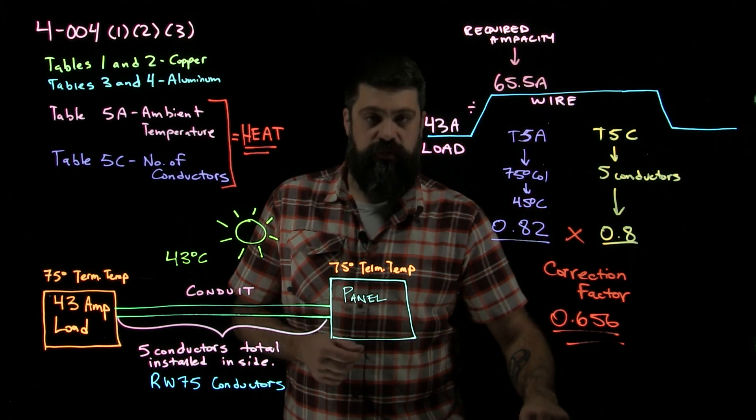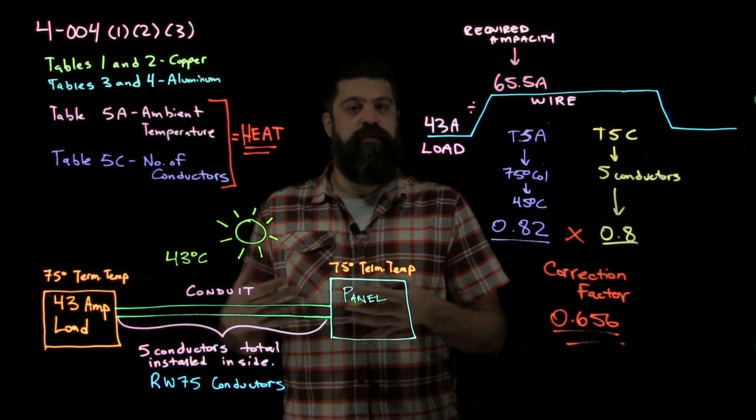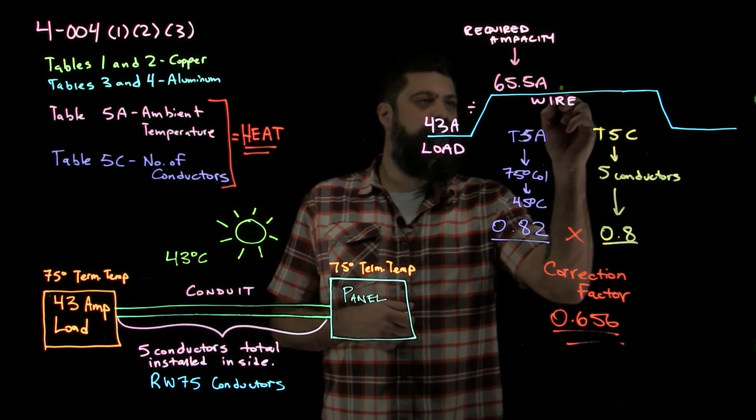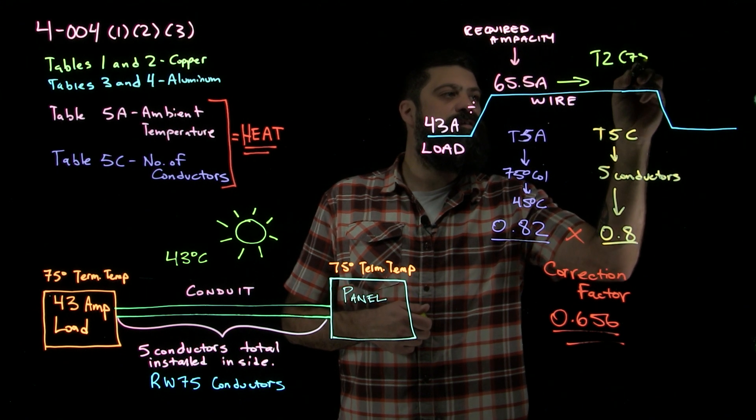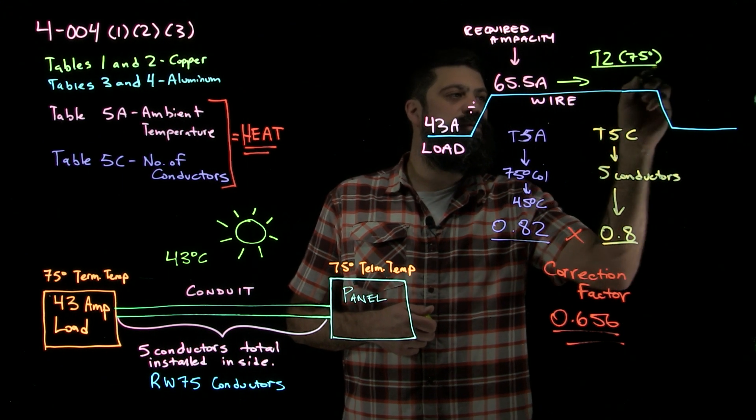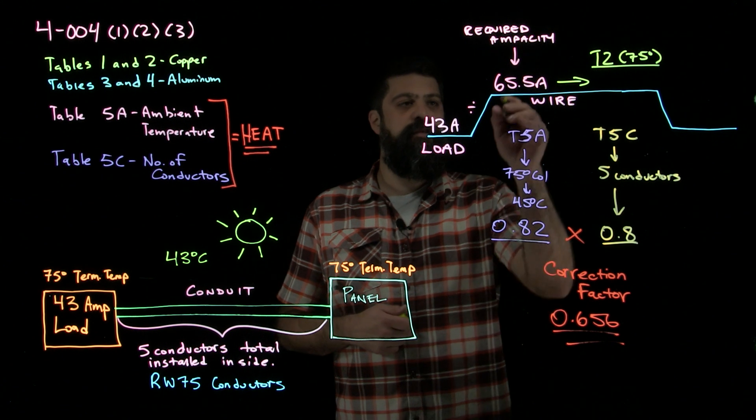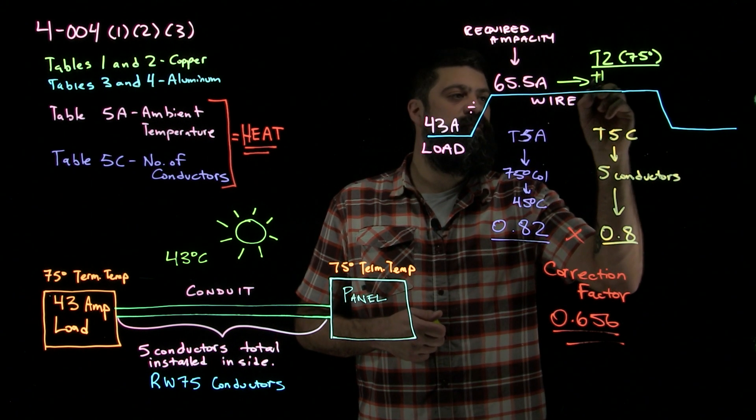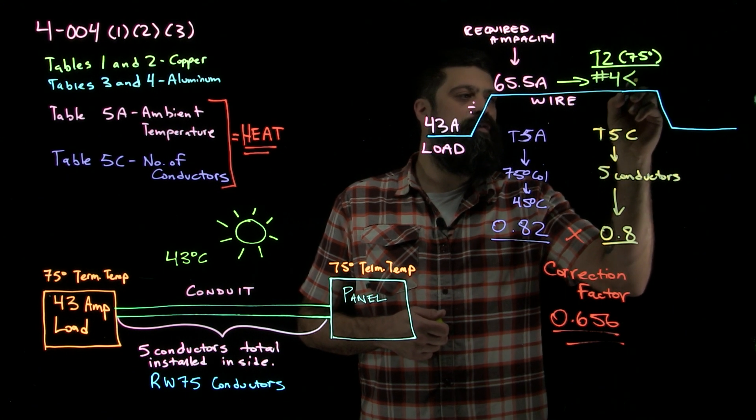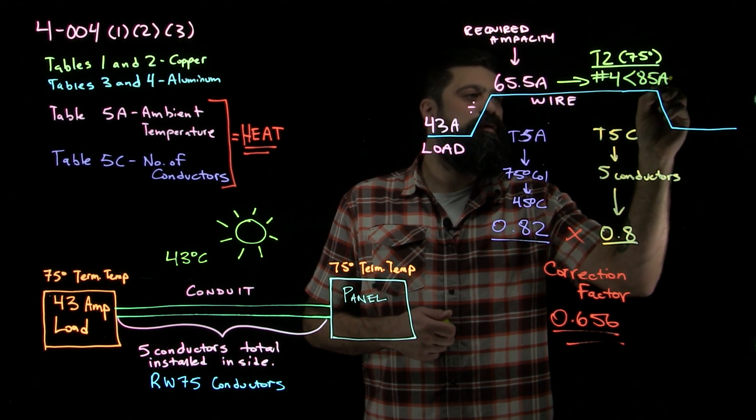So now I can just take this over to my tables to actually pick a wire. We're copper conductors. We're going to go over to table 2 and again, we're looking in the 75 degree column. That's our lowest termination temperature. When I go in the 75 degree column and look for a number that's 65.5 amps or the next one up, I would find a number 4 that's good for 85 amps. Great.